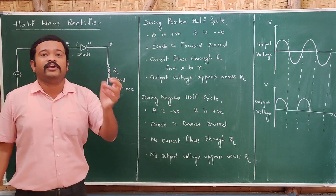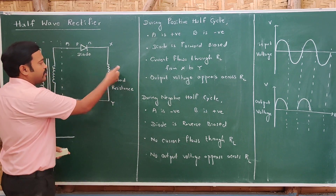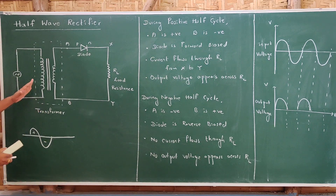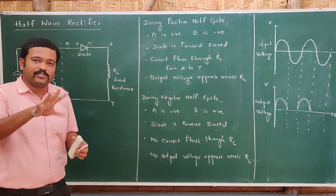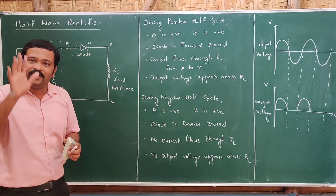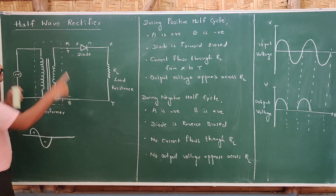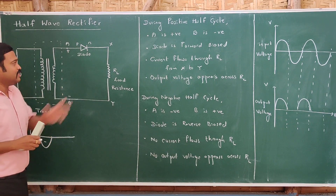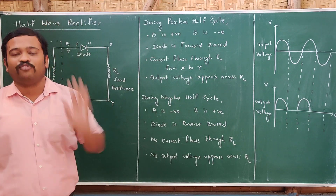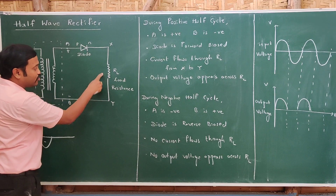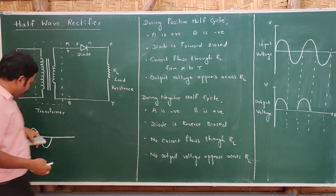Think of the load resistance as a bulb connected here — it can be a TV, mobile, or anything. We are supplying AC voltage to the circuit, meaning AC sends current in both directions alternately. During the first positive half cycle of AC input, A will be positive and B will be negative. The P side of the diode is connected to positive, so the diode is forward biased. When the diode is forward biased, current flows through it, through the load resistance from X to Y, and the bulb will turn on.